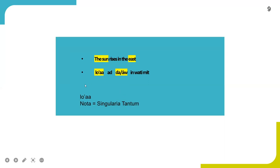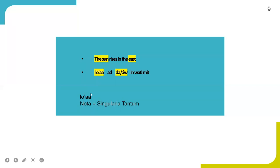In Gorwa, there are some singular nouns that do not have any plural form. Lua means 'sun,' and Lua is a singularia tantum — meaning singular only. So the word Lua in Gorwa doesn't have any plural form; it exists only in its singular form.